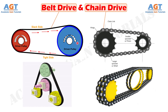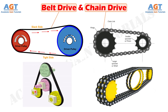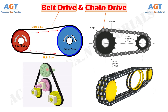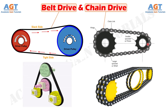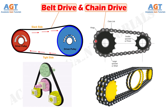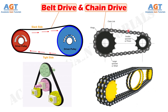As friction plays the primary role in power transmission, it is also called a friction drive. On the contrary, chain drive is one engagement type power transmission system that transmits motion and power by means of successive engagement and disengagement of chain with sprocket.